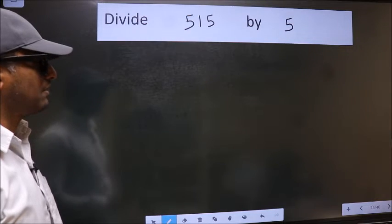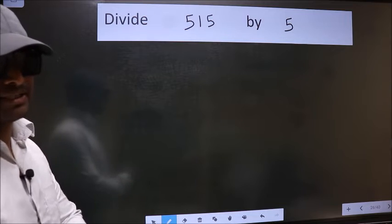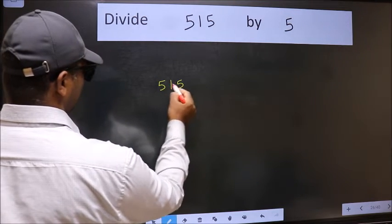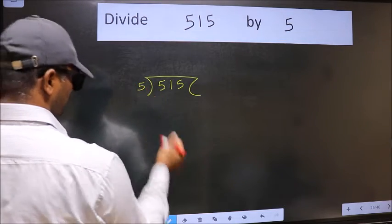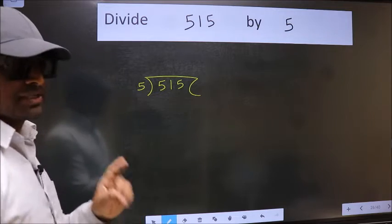Divide 515 by 5. To do this division, we should frame it in this way: 515 here and 5 here. This is your step 1.